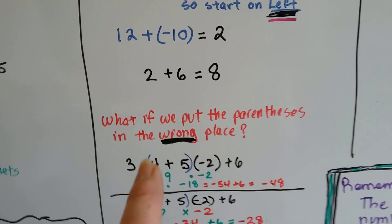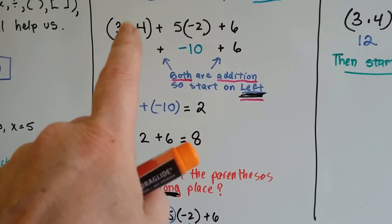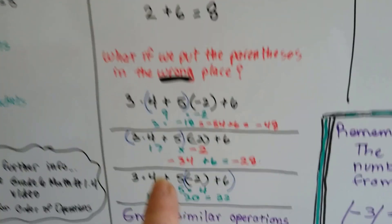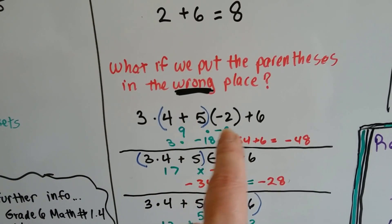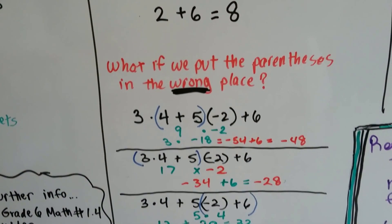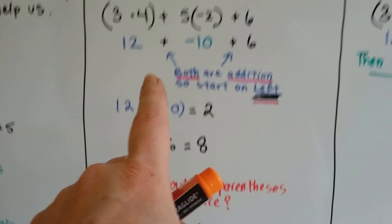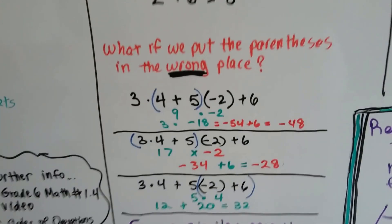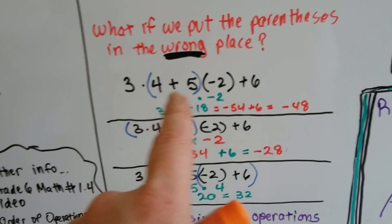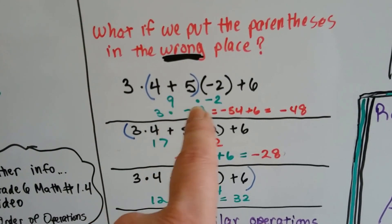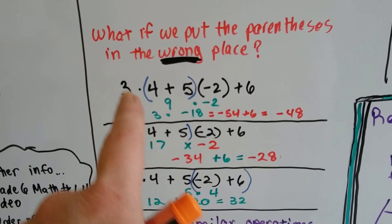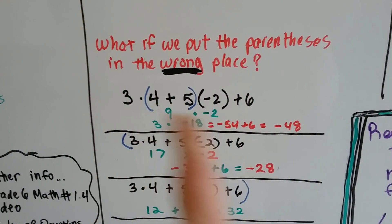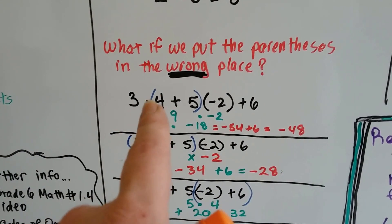What if we put the parentheses in the wrong place? If we put them around the addition instead of the multiplication, look what happens: we'd end up with 4 plus 5 is 9, then 9 times negative 2 gives us negative 18. Multiply that by 3 and we get negative 54. Add 6 and we get negative 48. That's all wrong — it didn't follow the order of operations by doing multiplication first.